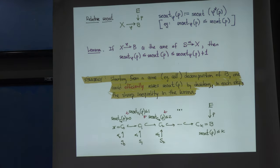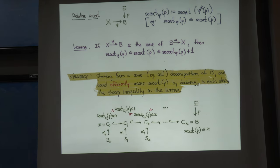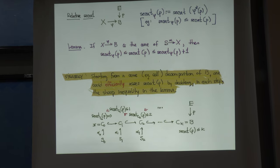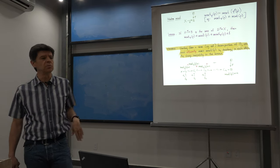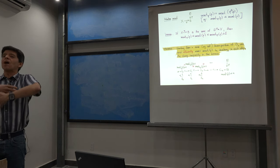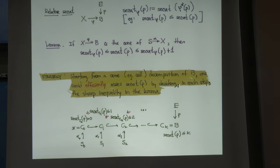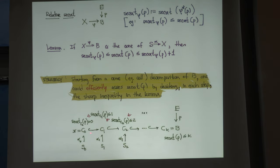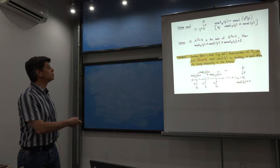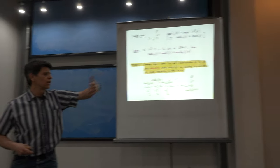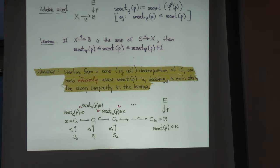This avoids the wasting-effort issue. Once you know the strategy is working, you just keep doing computations. You take your fibration, decompose the base space into a sequence of cones — a cone decomposition — and start with a point. The sectional category of a point is obviously zero. Every time you attach the next cone, the sectional category increases at most by one and does not go down. You need to decide at each step whether the sectional category stays or increases by exactly one, and you apply this recursively through the whole decomposition.